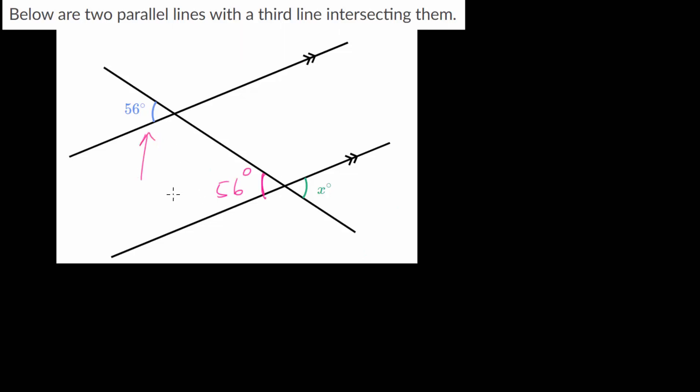But with this angle 56, we also know that this angle right here would also be 56 degrees. And we call these two angles corresponding angles since, in effect, they correspond to each other. For instance, this angle right here corresponds to this angle right here.